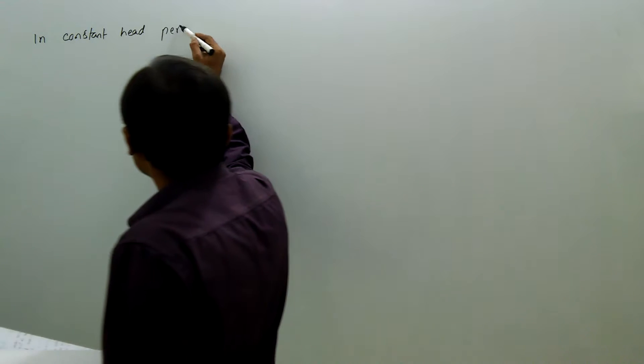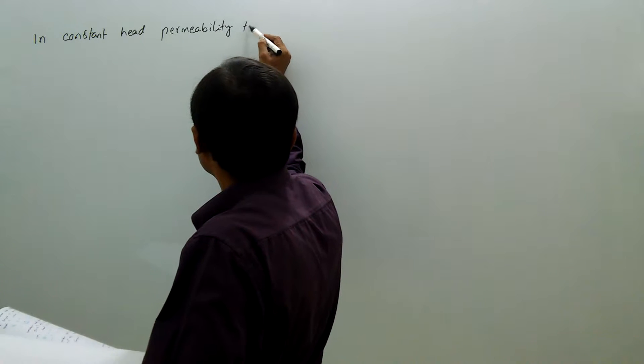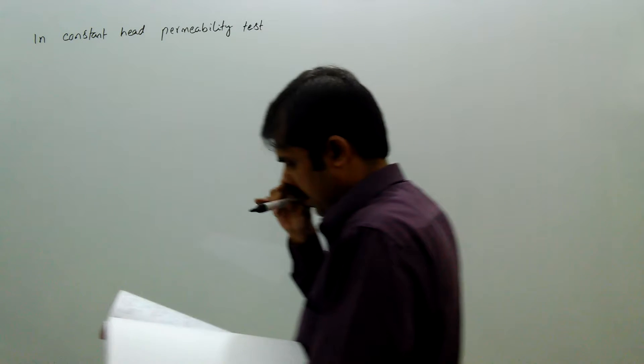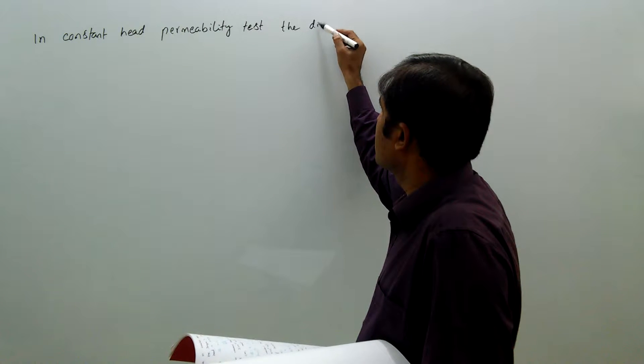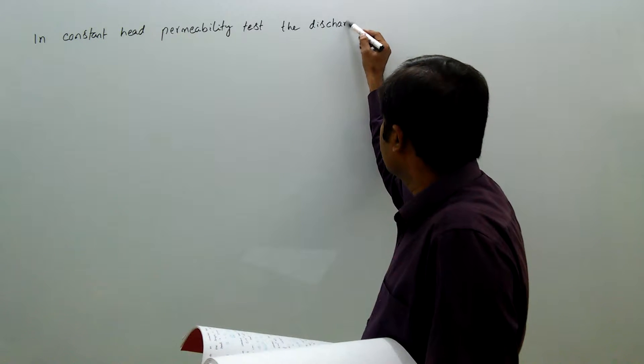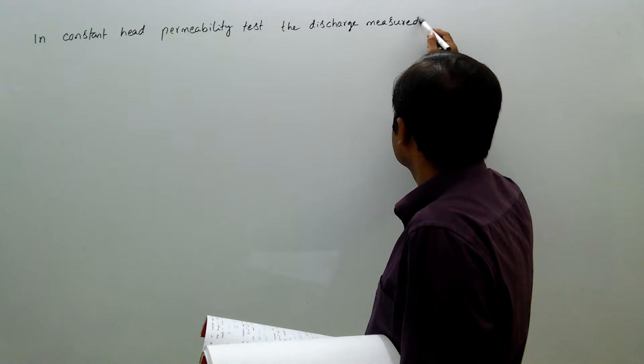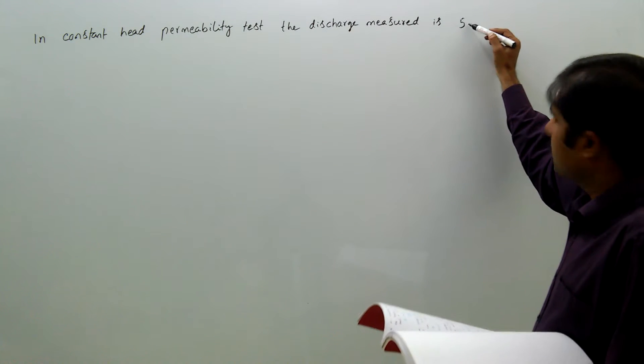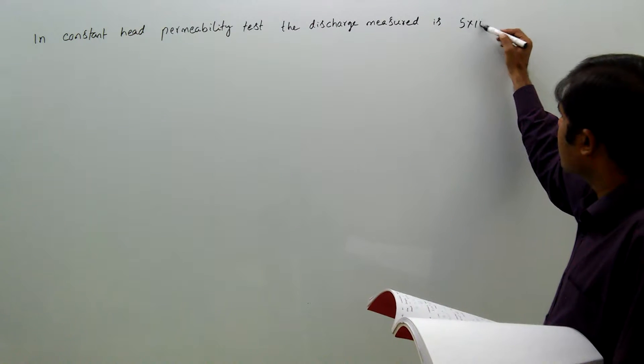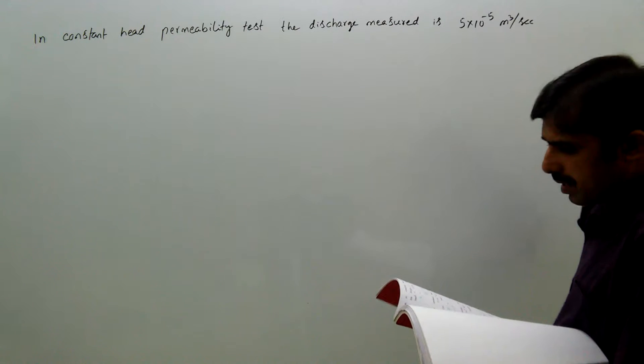In constant head permeability test, the discharge measured is 5×10⁻⁵ m³/s.